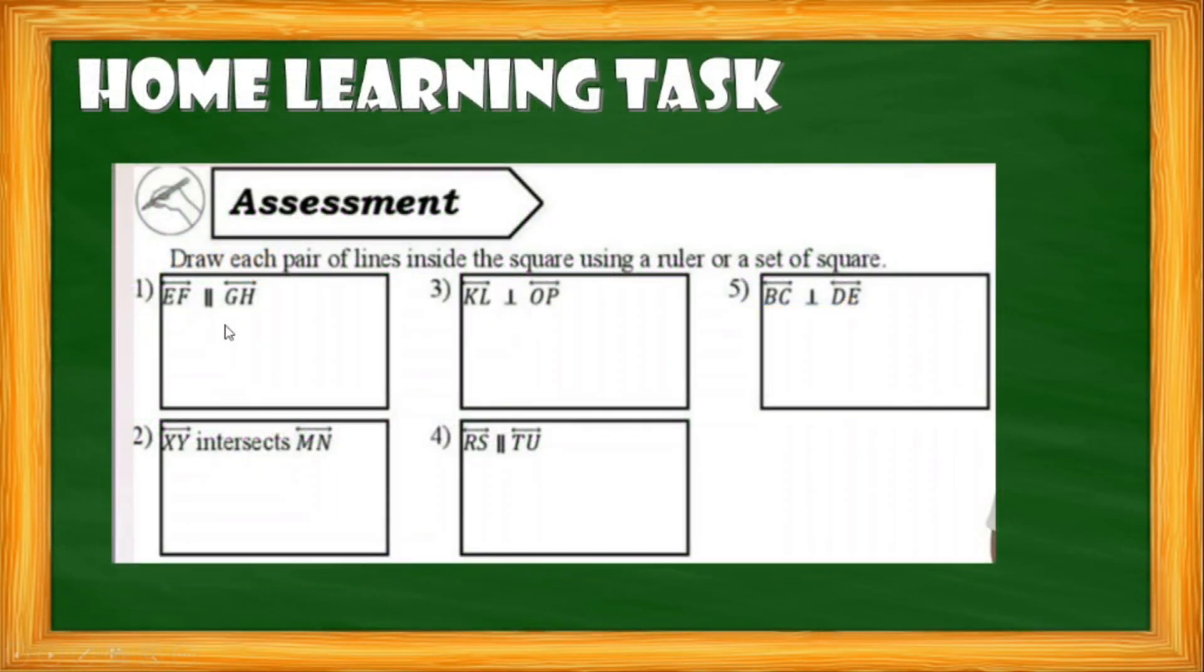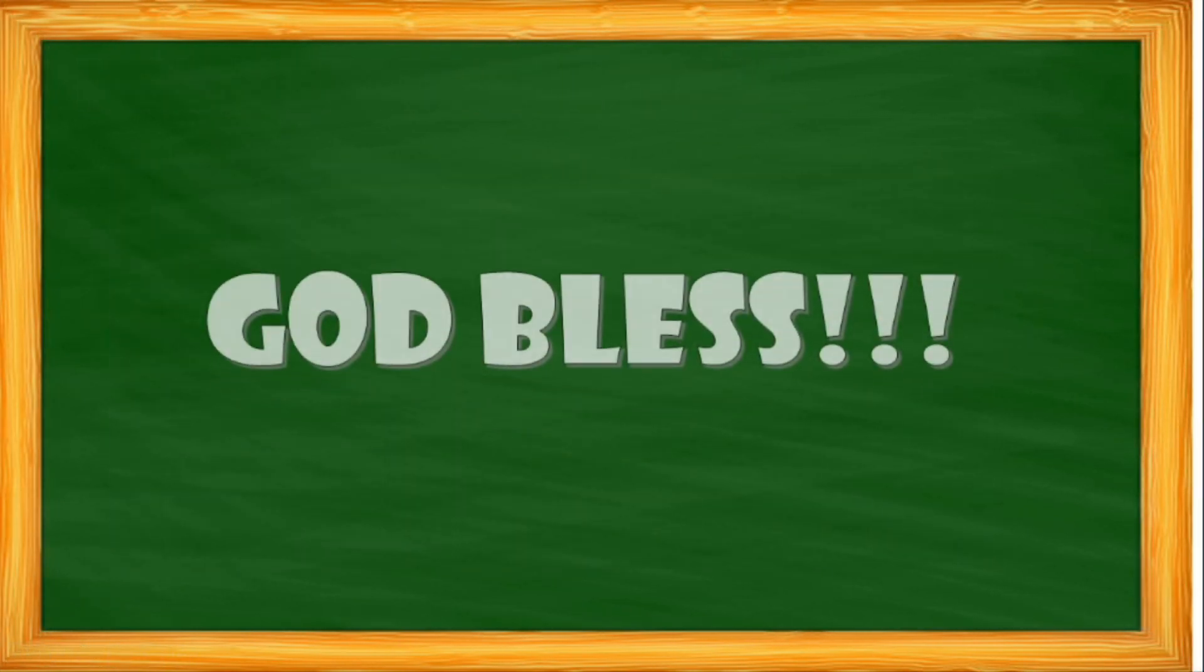For your home learning task grade 4 pupils, you're going to answer assessment 1, 2, 3, 4, and 5. You're going to draw each pair of lines inside the square using a ruler or set square. That's all for today. Thank you and God bless.